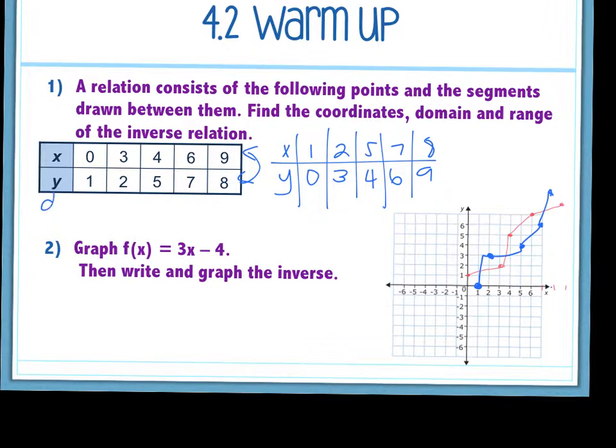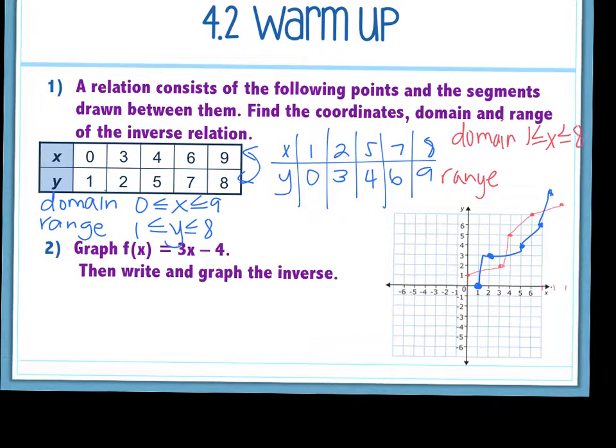So domain of my initial function is what? Yep, 0, good. 0-9. So the x values go 0-9. And then the range? 1-8, good. And then we just switch it for my inverse, right? So the range becomes the domain, the domain becomes the range. The domain is 1 less than or equal to x, which is less than or equal to 8. And the range, 0 less than or equal to y, which is less than or equal to 9. Easy stuff, right?